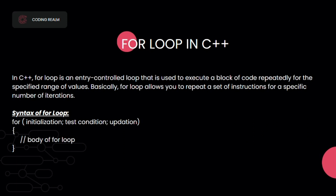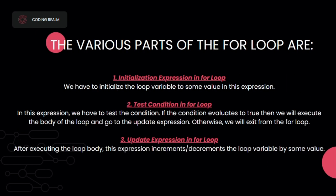For the initialization, for example, we declare an integer i equal to zero. The test condition works like an if statement — for example, a greater than b or a less than b. The updation refers to the increment and decrement operator. Finally, we have the body of the loop. This is the syntax of the for loop in C++.